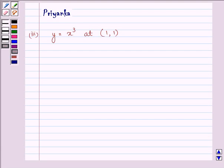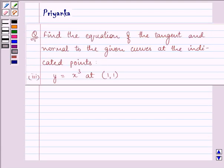Hello friends, how are you all doing today? The question says, find the equation of the tangent and normal to the given curves at the indicated points. Here we have y equals x cube at (1, 1).